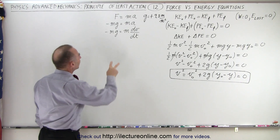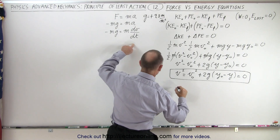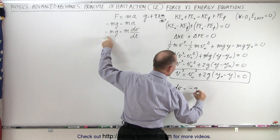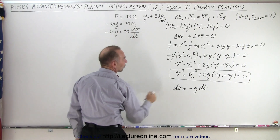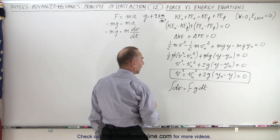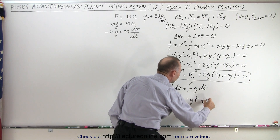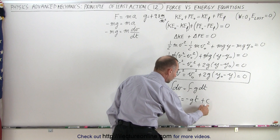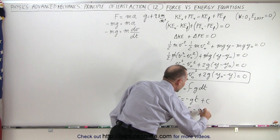We can get rid of M on both sides, move dt across, and write that dV equals minus G times dt. Then we integrate both sides: the left side gives velocity, and the right side gives minus G times t plus a constant of integration. That constant equals the initial velocity when t equals zero, so we get V equals V_initial minus G times t.